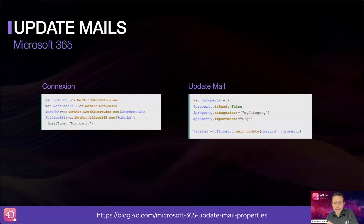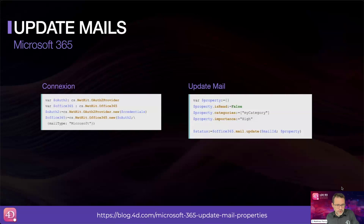Even though 4D hides most of the differences between the two ecosystems, some specificities remain. For example, labels are a Google-specific feature that replaces folders in Microsoft 365. While an email can only be stored in one folder in Microsoft, Google allows applying multiple labels to the same email. This difference will be reflected in the 4D NetKit API. Most of your code will be very similar, but once you start using folders with Microsoft or labels with Google, you will have differences.